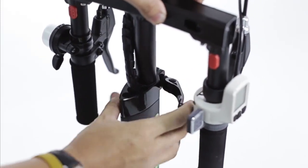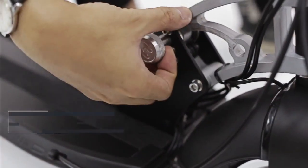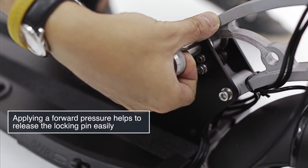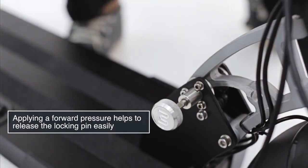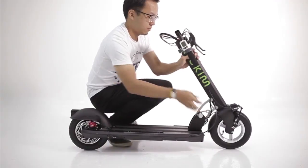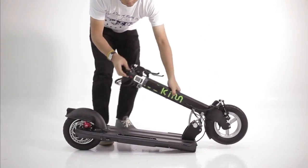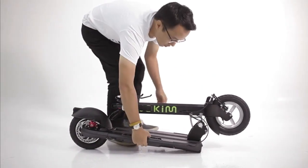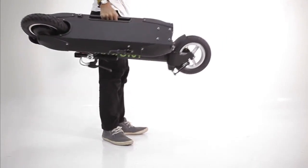While applying forward pressure to the stem, pull on the locking pin to bring the stem down. The pin will automatically lock back in place when the scooter is completely folded. You can lift the scooter by the built-in carry handle.